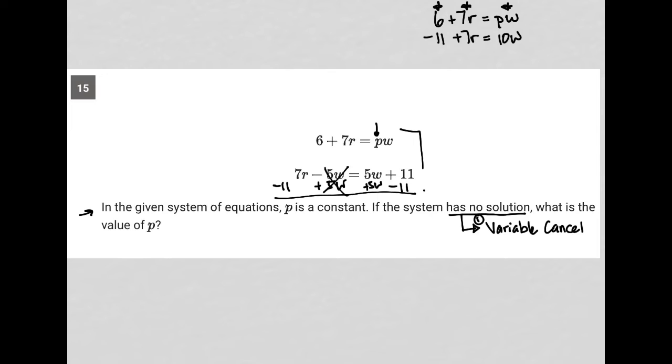If I multiply the bottom equation by a negative sign, I get -11 becoming +11, +7R becoming -7R, and +10W becoming -10W. Why? Because by doing so, the R values cross out.